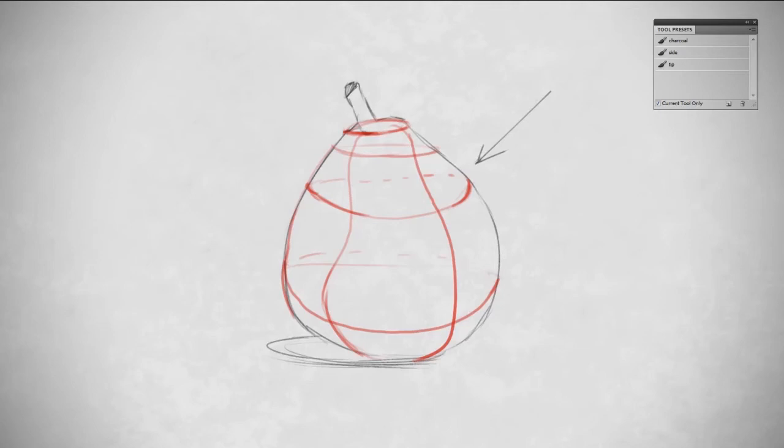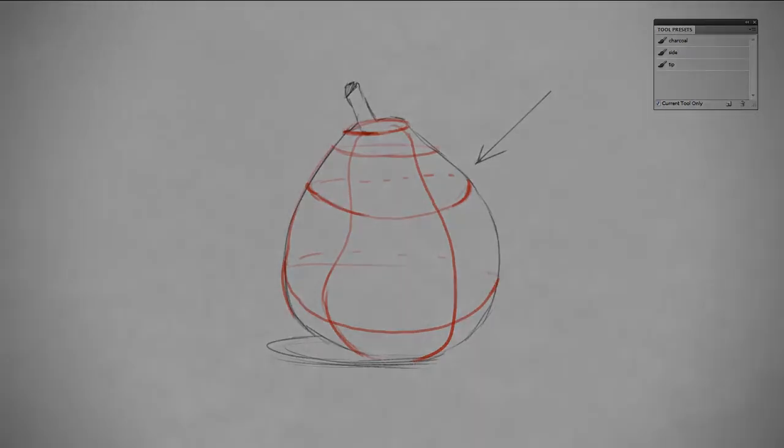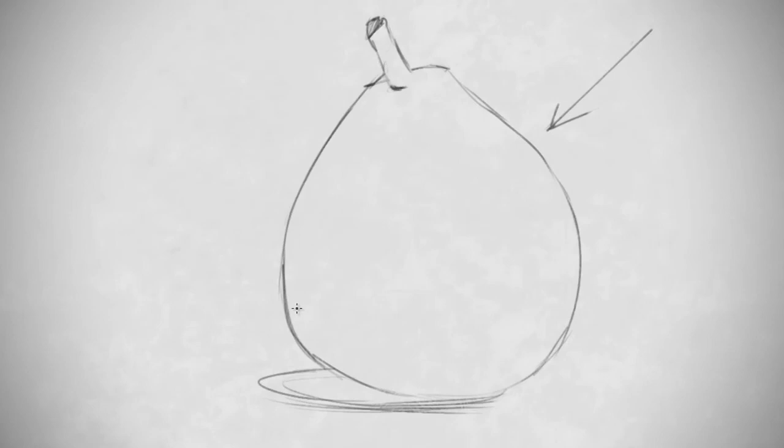So the job now is to use crosshatching pencil lines to impart this to the viewer. So I'll begin to lay in my crosshatch strokes, but I'll draw them along the lines of that invisible grid. So here I'm drawing what on a globe would be like the equator—they would be lines of latitude.